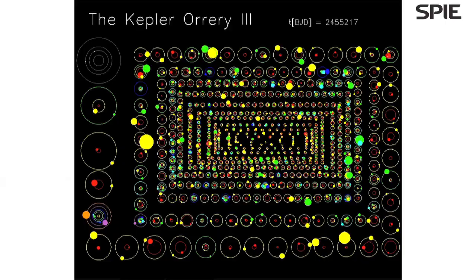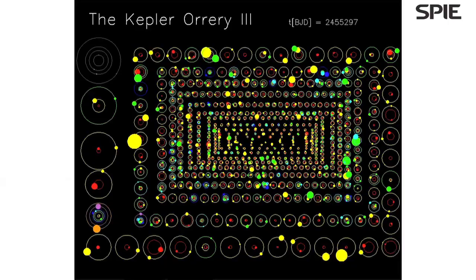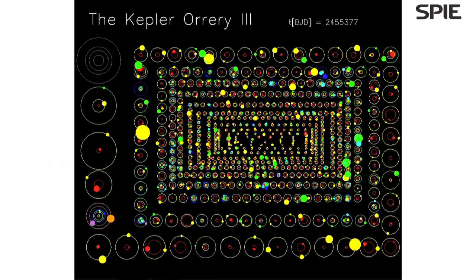Over 3,500 planetary candidates have been discovered so far and we've only analyzed the first two years of data. Most of those are planets that are much smaller than Neptune. In fact, some of the planets are as small as Mercury or a little bit smaller, about the size of our own moon.